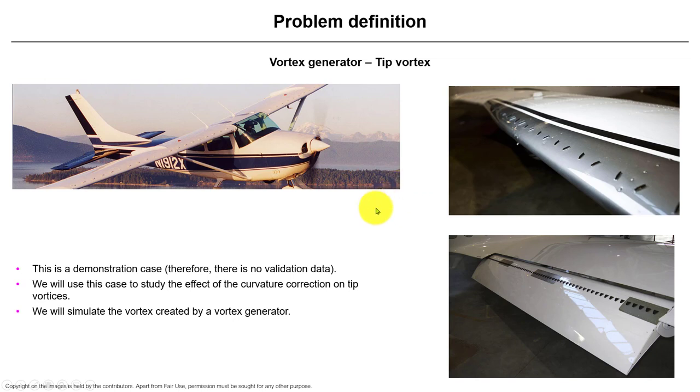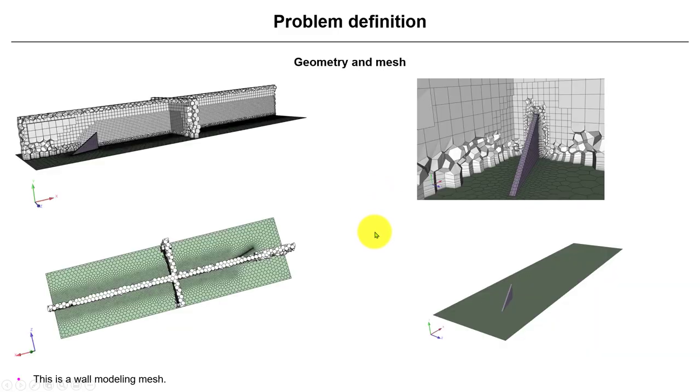This is a demonstration case. We don't have any validation data, however we know what should be the behavior. This is what we have - this mesh with a small domain. See that we have this vane here that we put, and the flow, the incoming flow will come here, and then it's going to generate that concentrated vortex.